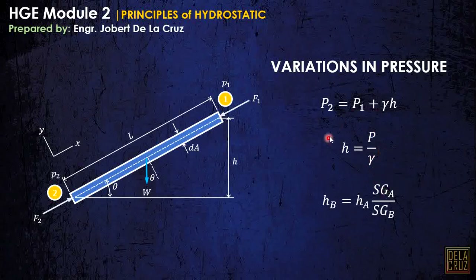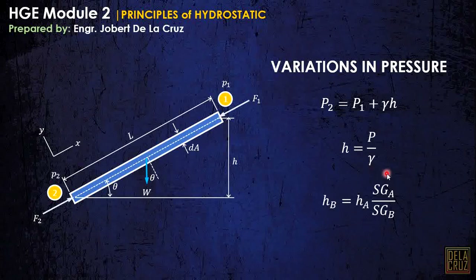We know that pressure P is equal to gamma times height. Cross-multiplying, H is expressed as P over gamma — and this is what we call pressure head. We also have a relationship between H and the specific gravity.